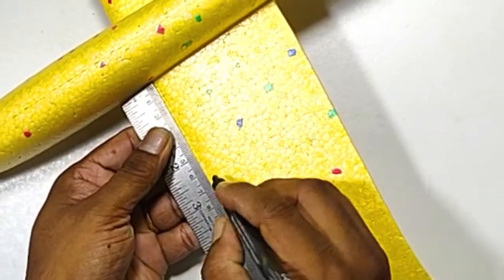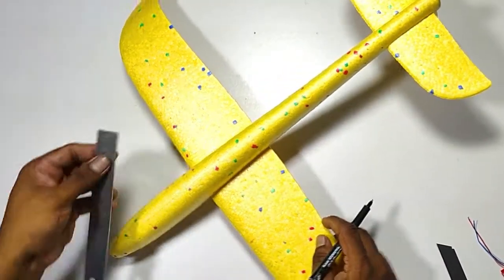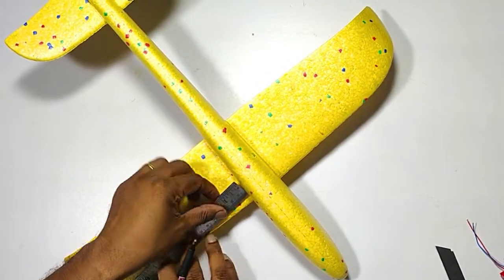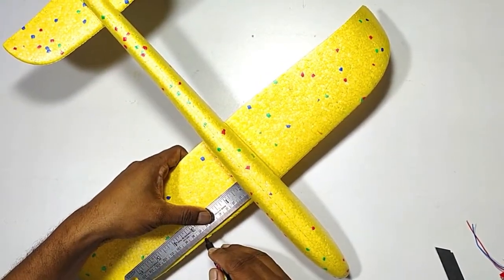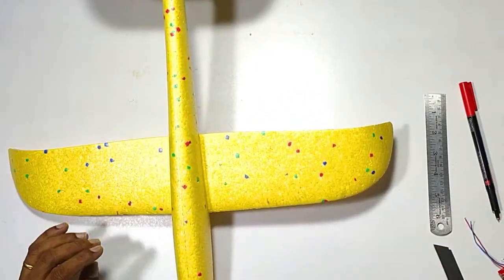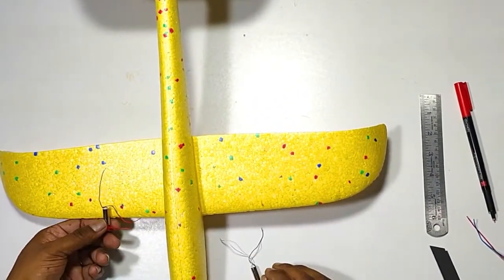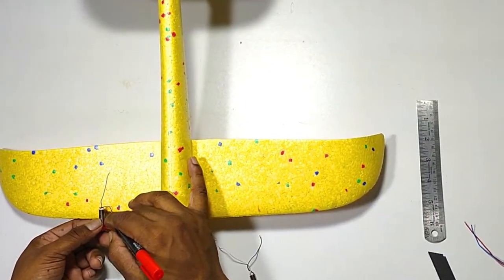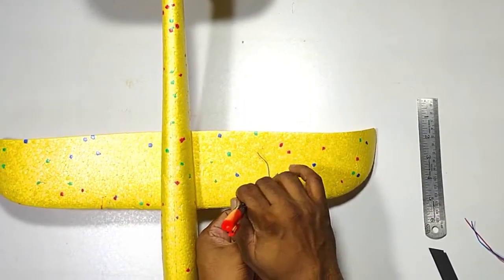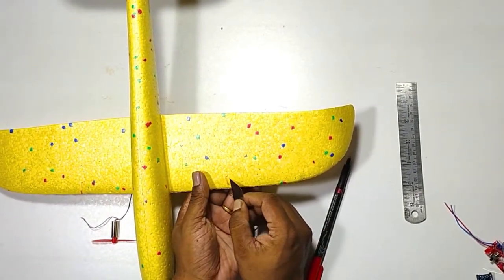Here, mini motor acts as an engine for our aeroplane. So we need to fix this motor on both the wings. Mark the point from the body, 7cm on both sides. So that the motor weight will be distributed equally on both the wings. It ensures the flight stability during flight mode.